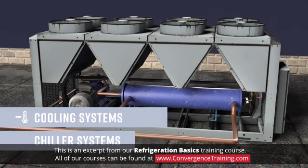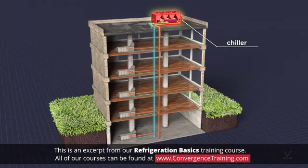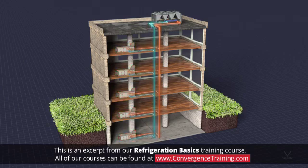In chiller systems, a chiller unit uses the refrigeration cycle to produce chilled water that is pumped to the cooling coil in the air handler. At the cooling coil, the chilled water absorbs thermal energy from the building air.